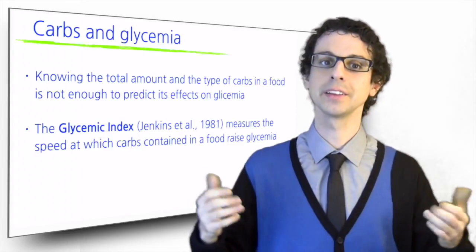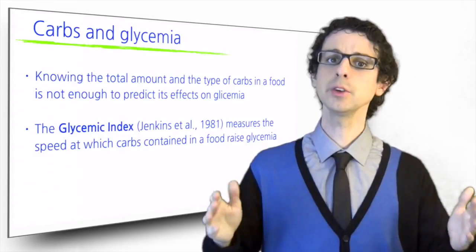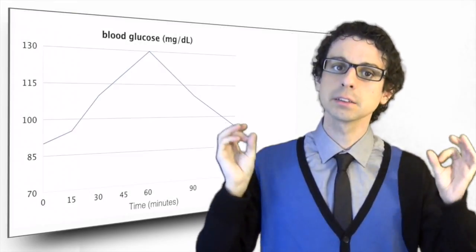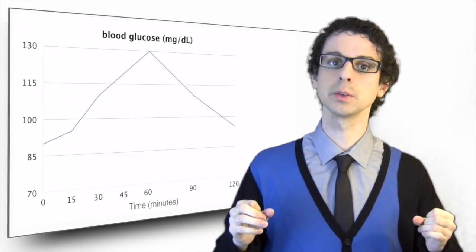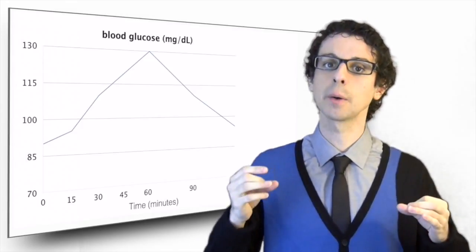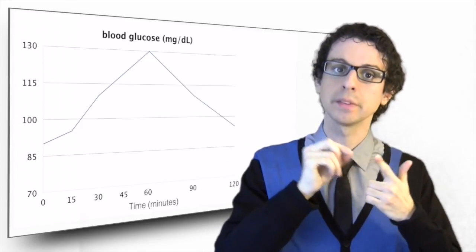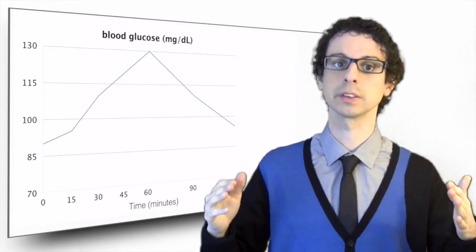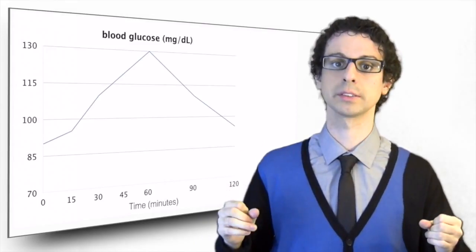You may wonder how this index is calculated. In a few words, here's how. You take a solution of 50 grams of glucose in water and you give it to a group of individuals. Then for the next two hours, you draw a drop of blood by finger puncture at regular intervals, and you measure blood glucose concentrations.